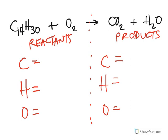So how many carbons do I have? Fourteen. Fourteen on the reactants. How many on the product side? One. How many hydrogens? Thirty. How many hydrogens? Two.